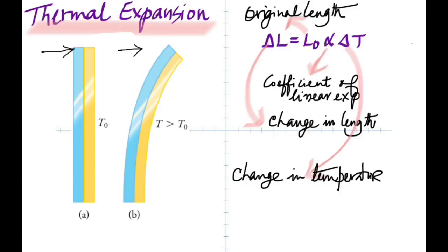All metals expand when heated — some more than others, but all do. So of course the hole must change. Having the material there or not doesn't make any difference; the circular region will expand the same way. A practical example: horse cart wheels made of wood have an iron tire fitted by heating the iron tire, which expands its radius, placing it on the wooden beam, and letting it cool and shrink tight — you can never remove it without heating it again.